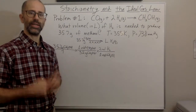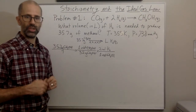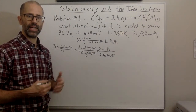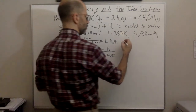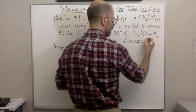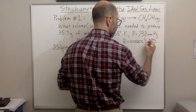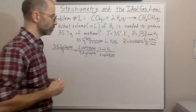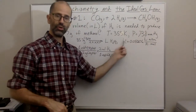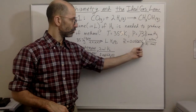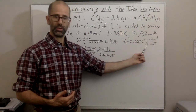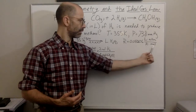Whenever you're using the ideal gas law, I need to stress that temperature is always in Kelvin. You need to make sure the temperature is in Kelvin and the pressure is in atmospheres because of the ideal gas law constant. The ideal gas law constant R is equal to 0.08206 liter·atmospheres per Kelvin·mole. Because of these units, if you're using this value of R, you need to make sure you're in liters for volume, atmospheres for pressure, Kelvin for temperature, and moles for the amount of gas — you can't use grams.